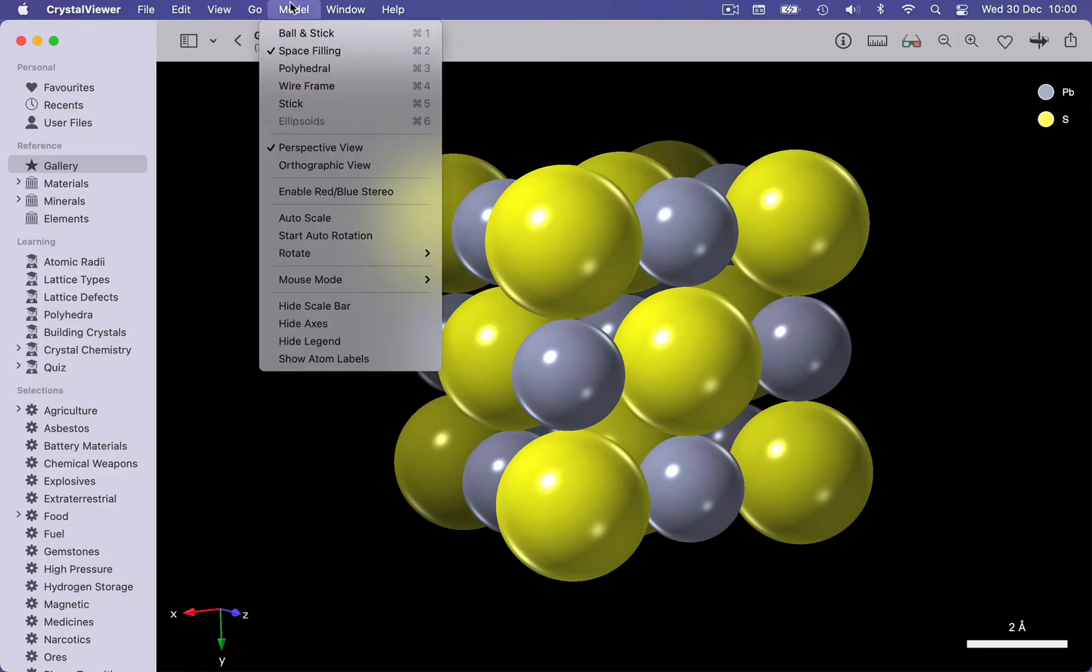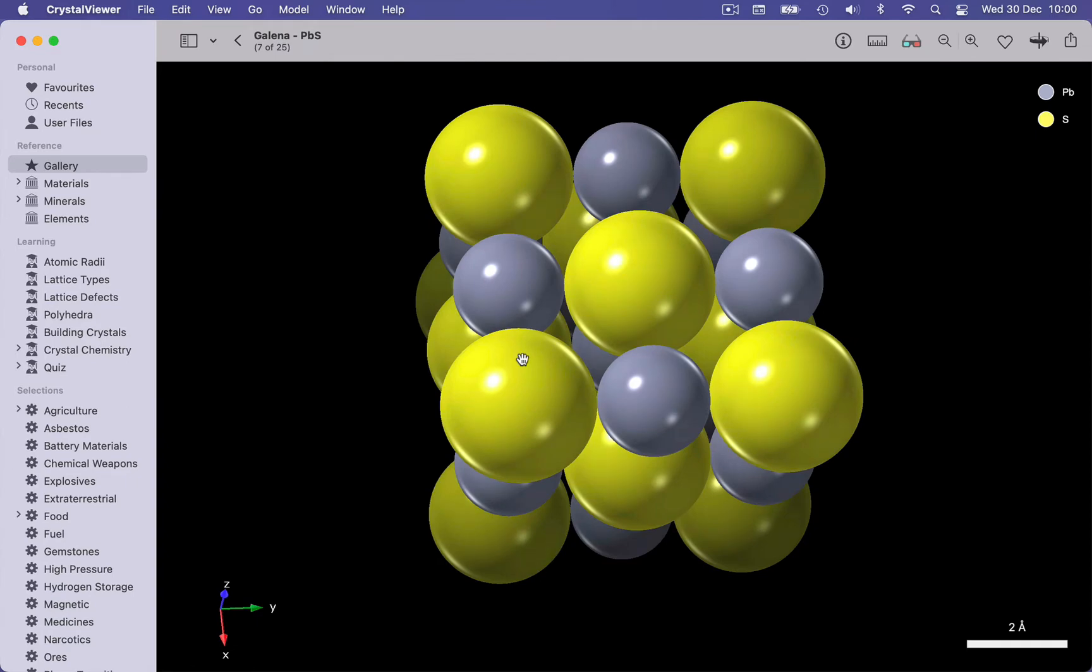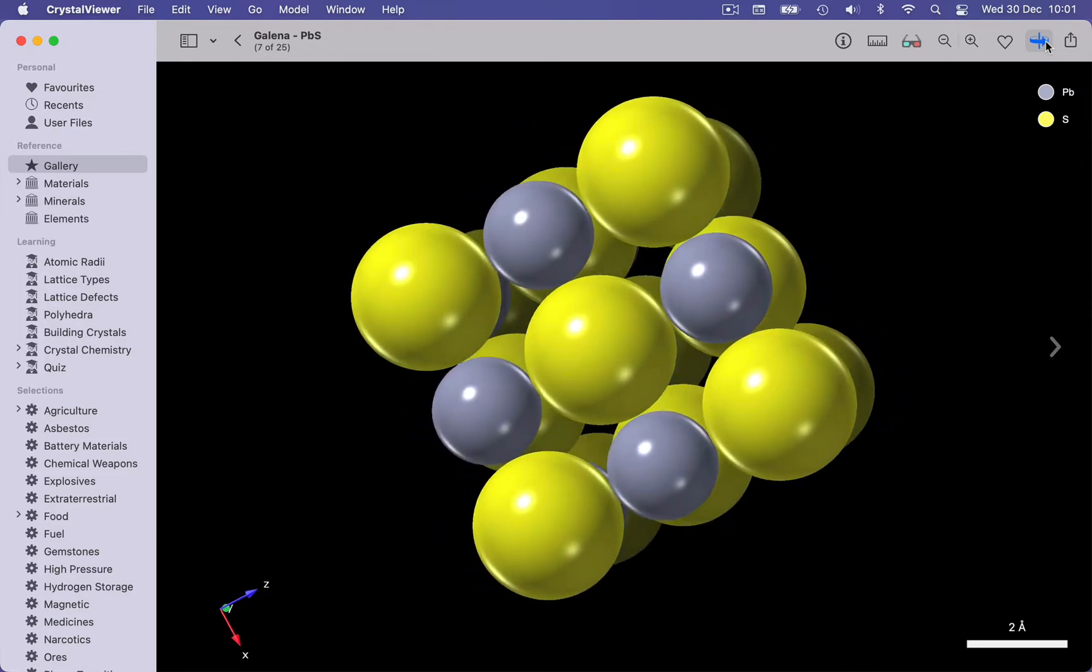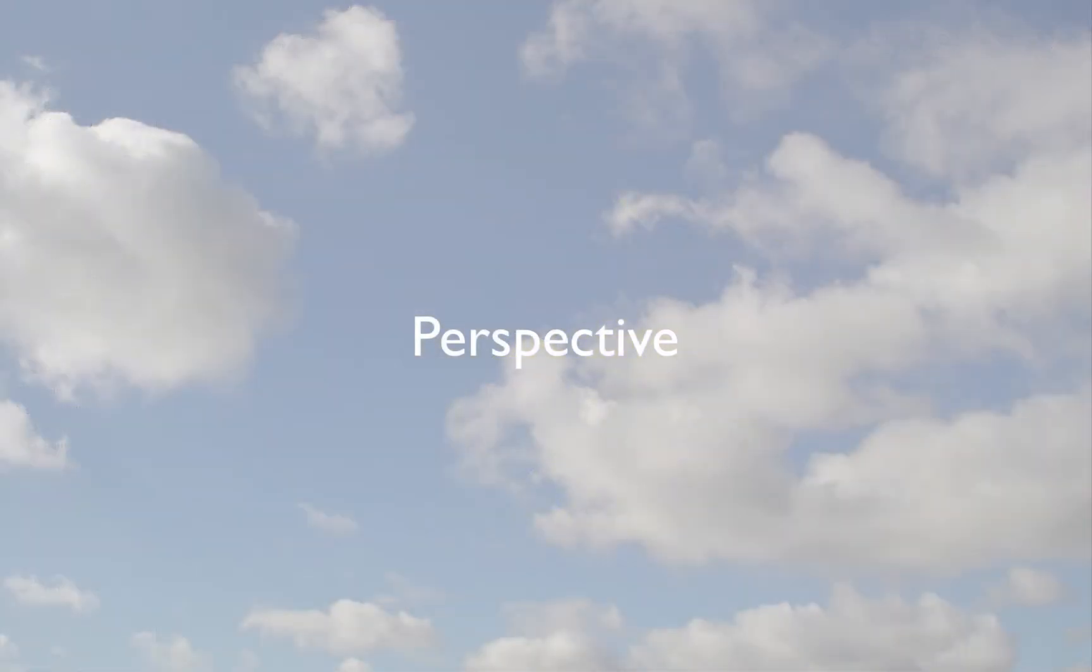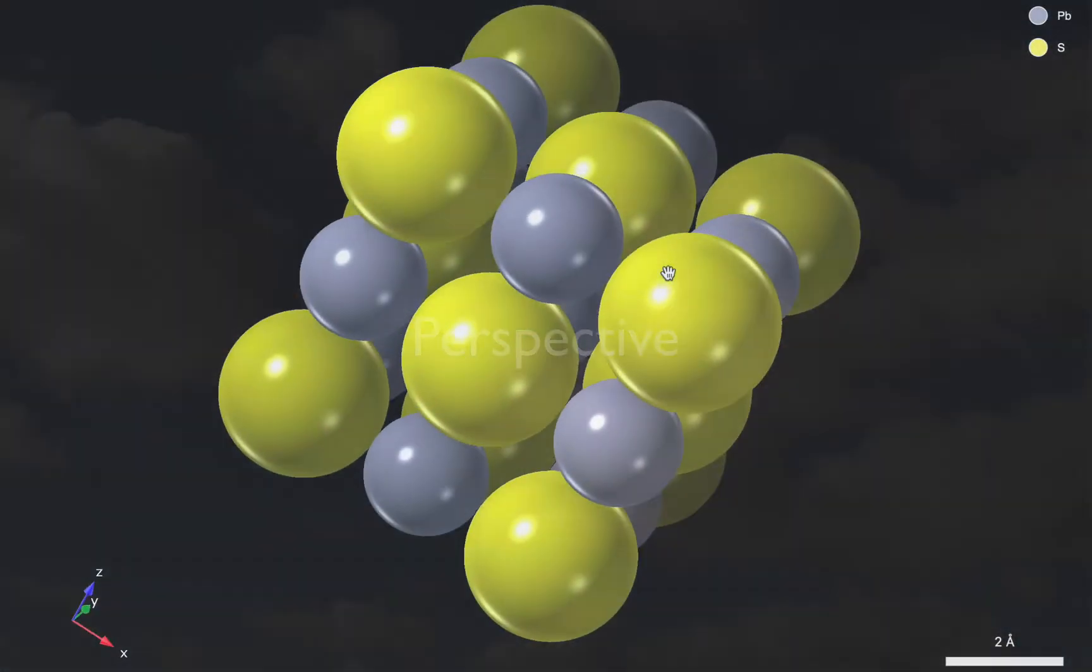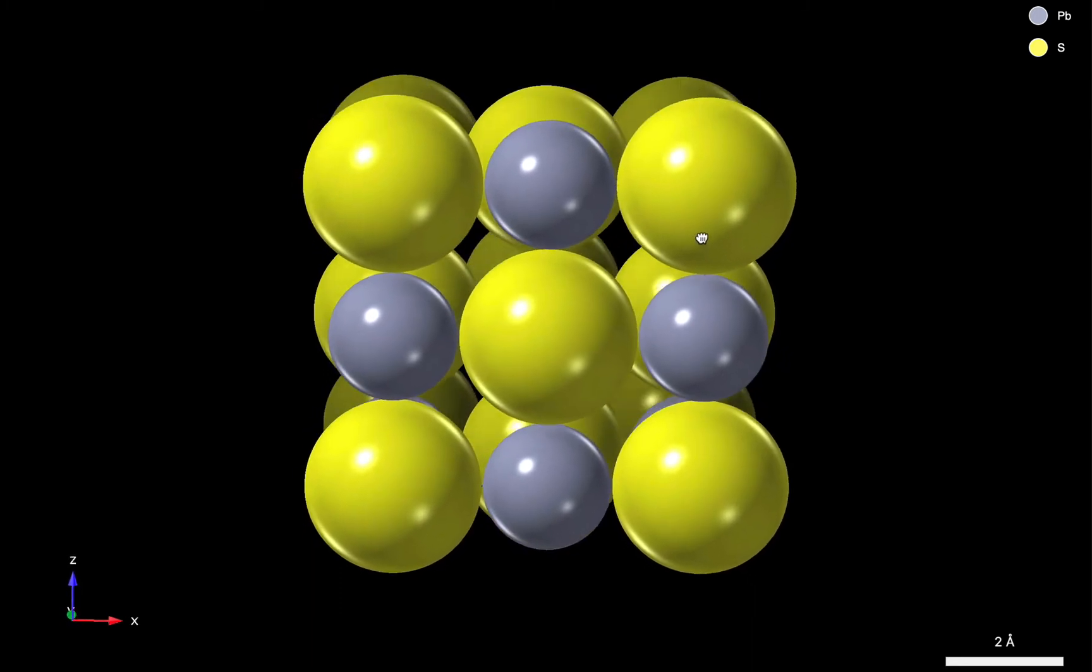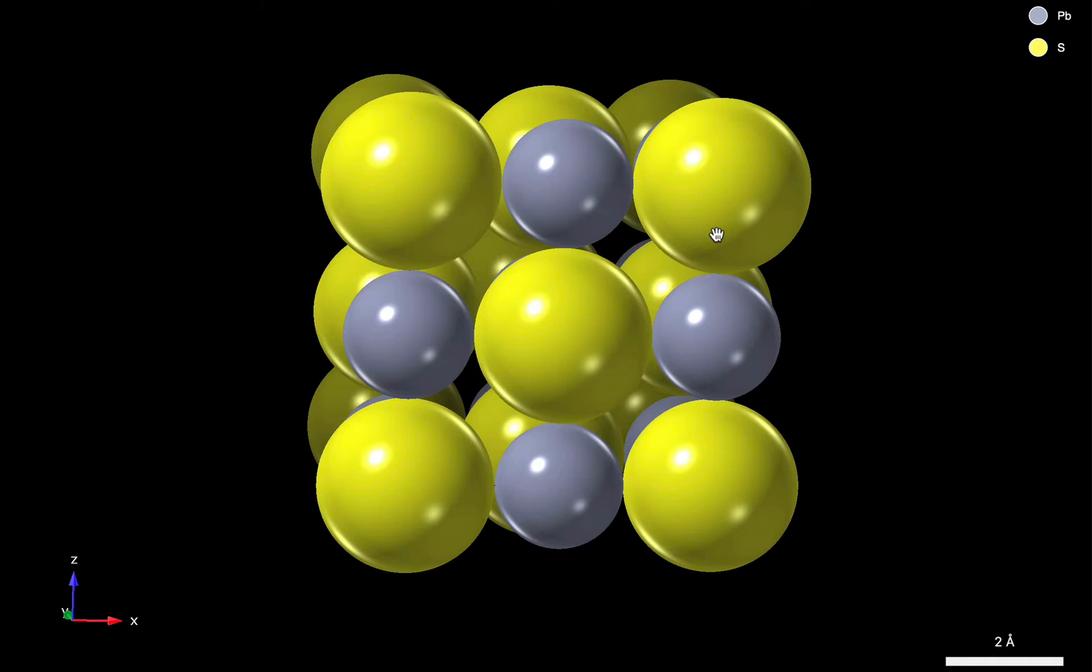We can go to the Model menu to rotate about 90 degrees through any of the screen axes. We also have the option of Auto-Rotation, which we can get to using the Auto-Rotate button in the toolbar. Now you may notice that there's a degree of perspective that's been added to this model. The atoms in front look slightly bigger. By default, Crystal Viewer applies a subtle amount of perspective to any structure that it loads. This helps to enhance the sense of depth.